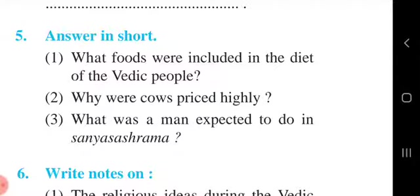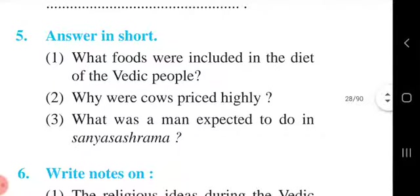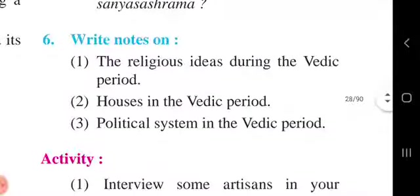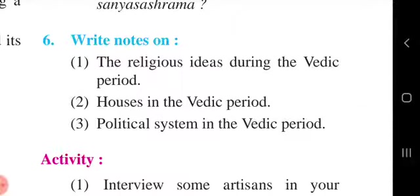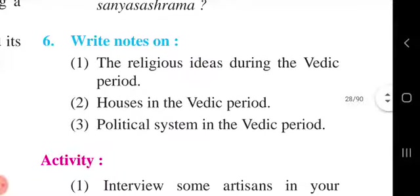Next, write notes on the religious ideas during the Vedic period. First point: The Vedic people offered prayers to the forces in nature, such as the sun, the rain, the rivers, lightning, and storms, to get blessings. Second point: They made ritual offerings in the fire to secure favor from the forces in nature.